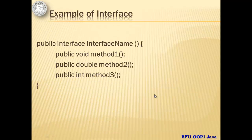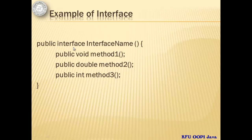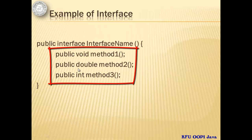Here is an example construct of an interface. Notice that after the word public is not class but interface. Notice also that the three methods are abstract, which means that their content and definition will be in the class that implements it.